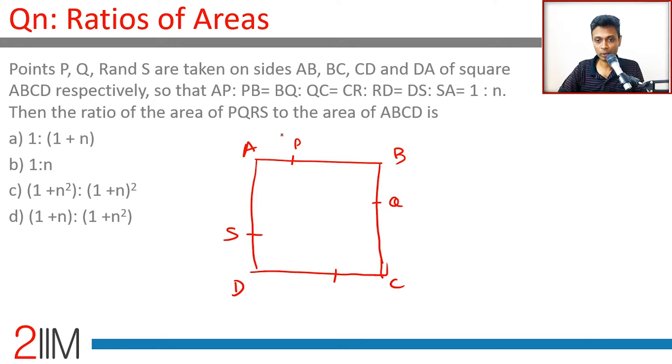This one is to n. Then the ratio of area of PQRS to that of area of ABCD. This is one is to n. Let's take it as one and n, take this one and n, one and n.